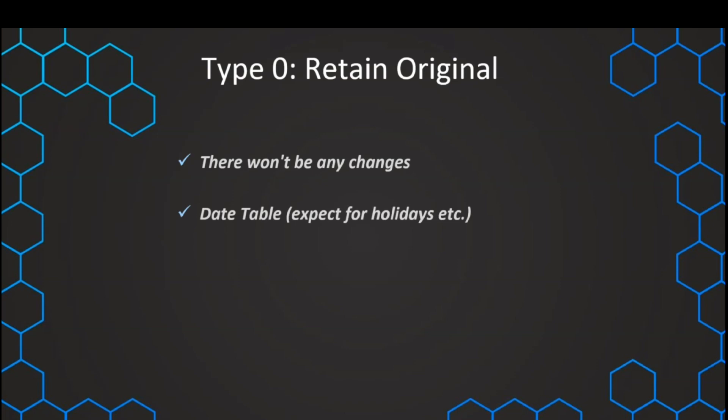We don't need to implement any strategy. We can just leave the dimensions as they are. This is usually applicable for date tables, except there can be some attributes in this date table — for example, company holidays — that might be subject to changes as well. But in general, the date table is really a static table that is not really having any changes.